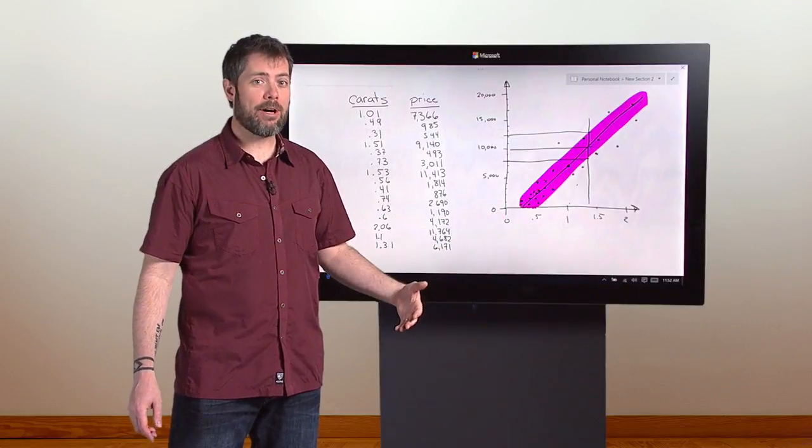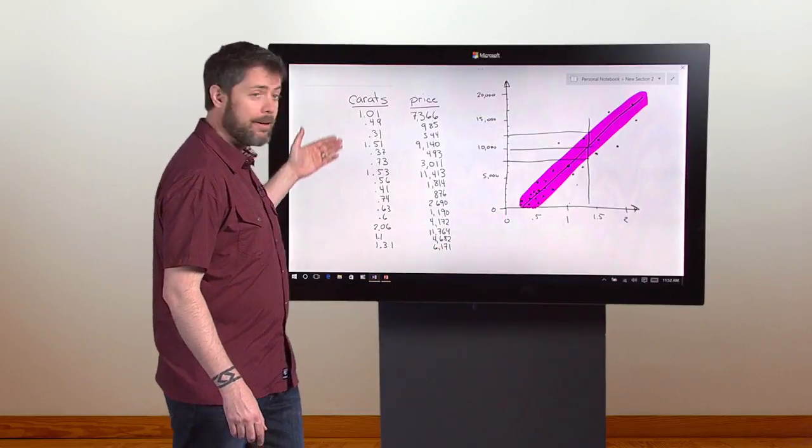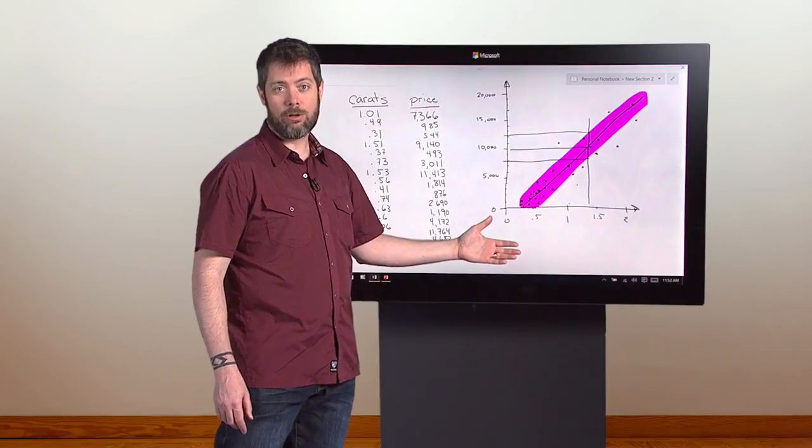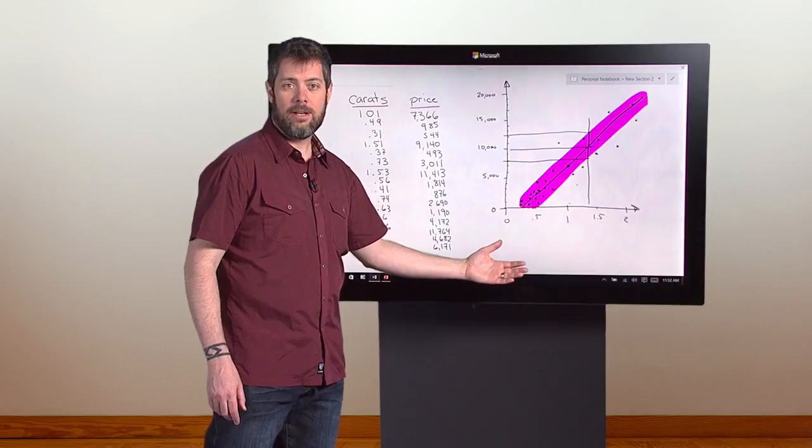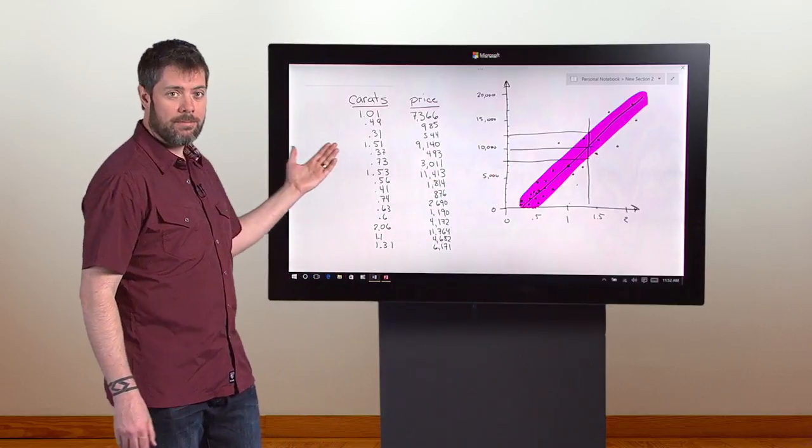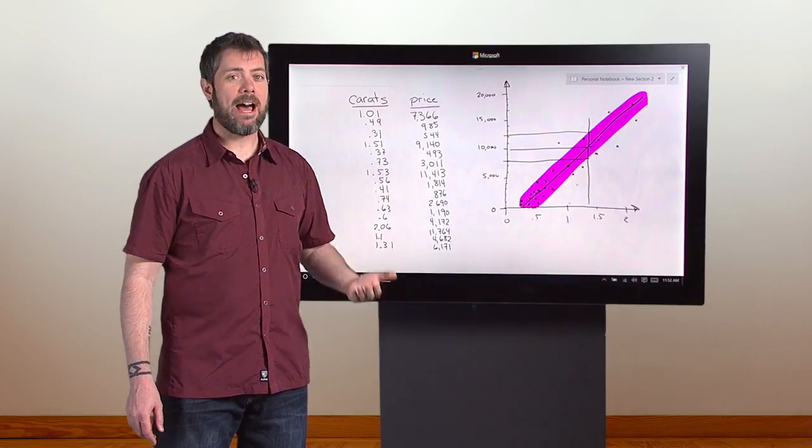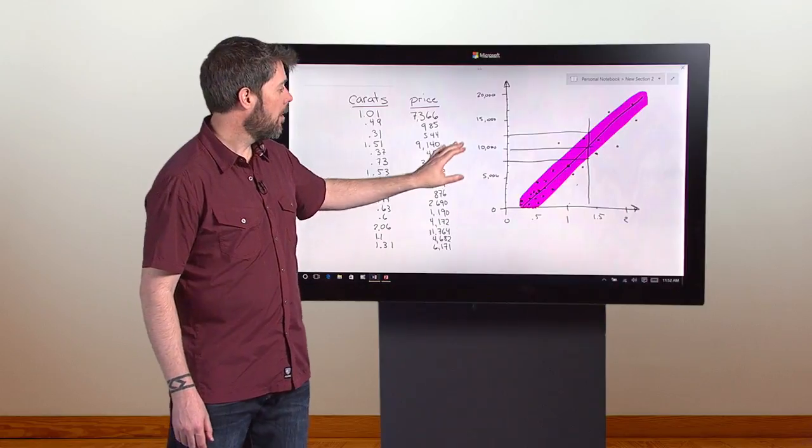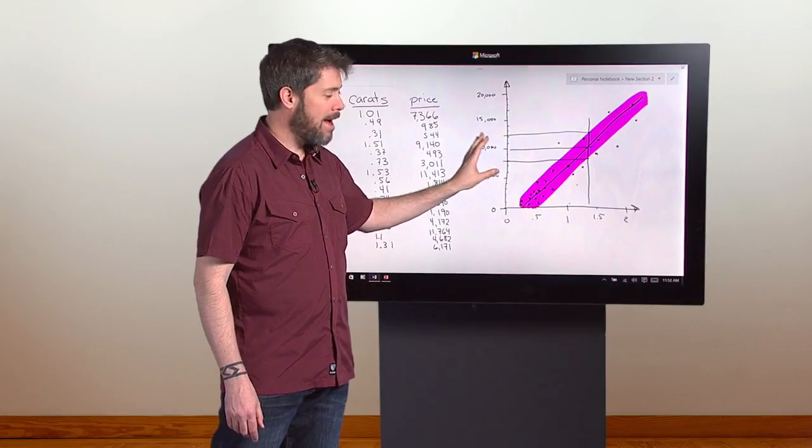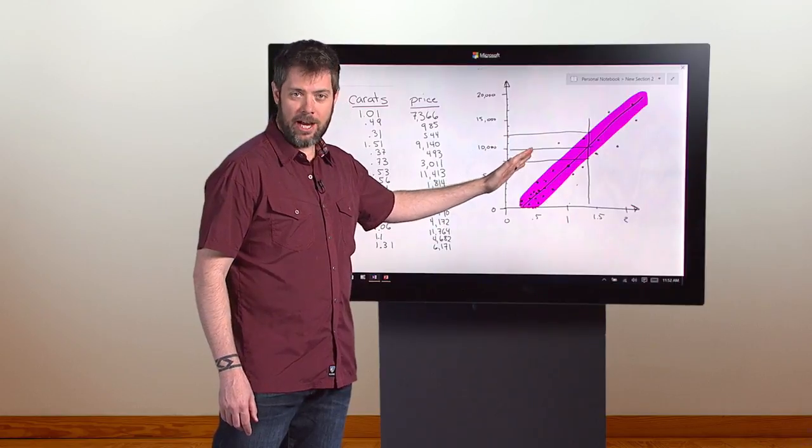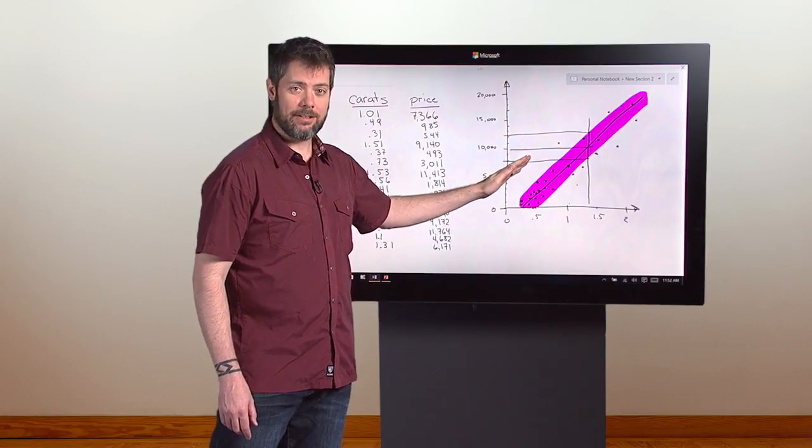Now, if we'd had more information like the cut of the diamond, color variations, how close the diamond is to being white, the number of inclusions in the diamond, then we would have had more columns. In that case, math becomes helpful. If you have more than two columns, it's hard to draw dots on paper.